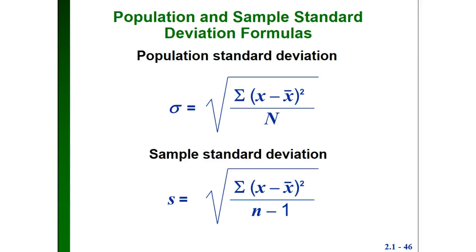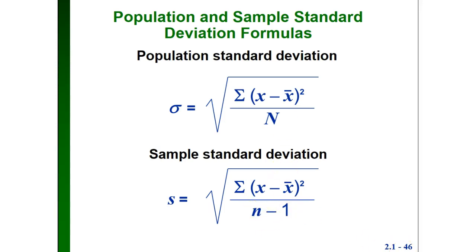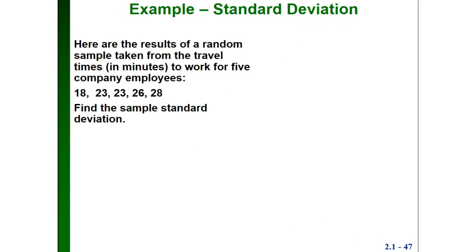Here are the two formulas for the standard deviation — one for a population, one for a sample. The only difference is that the population formula divides by N (the number of values in the population), while the sample formula divides by n minus one. In both, we take each data value x, subtract the mean x-bar, square that result, then use sigma to add all those squared values together before dividing and taking the square root.